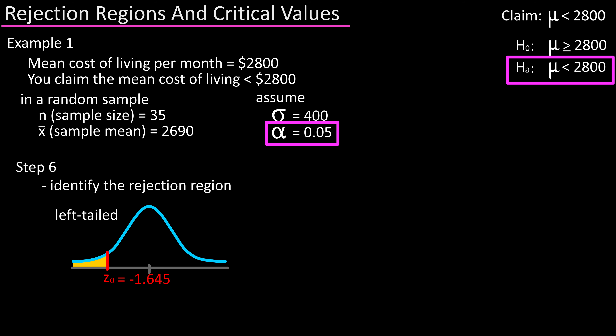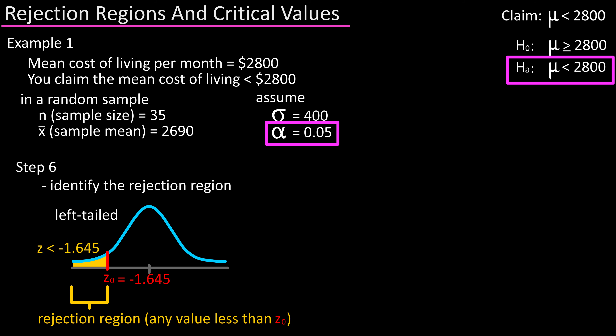Step six: identify the rejection region. Our rejection region is any standardized test statistic value that falls in the shaded area — that is, any value less than z-naught, which is any value less than negative 1.645. This is often written as z less than z-naught, so z less than negative 1.645.